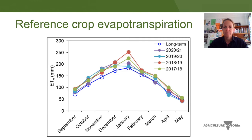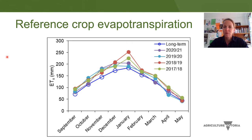This slide shows the long-term reference crop evapotranspiration for the Goulburn Valley. The blue open symbols show the long-term values, and I've also plotted each of the last four seasons. Generally there's very little difference in monthly totals between seasons. A few summers ago we had heatwave conditions in January and you can see a slightly higher ETO response in those two seasons. Generally there's not a huge shift in ETO, though you might be interested in altering it in the spreadsheet to see what effect it has. In terms of a seasonal budget, there's usually not a lot of difference between seasons.